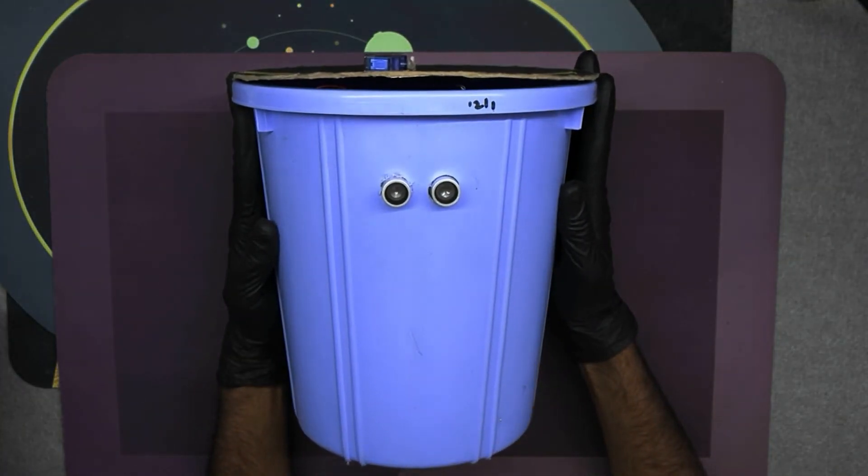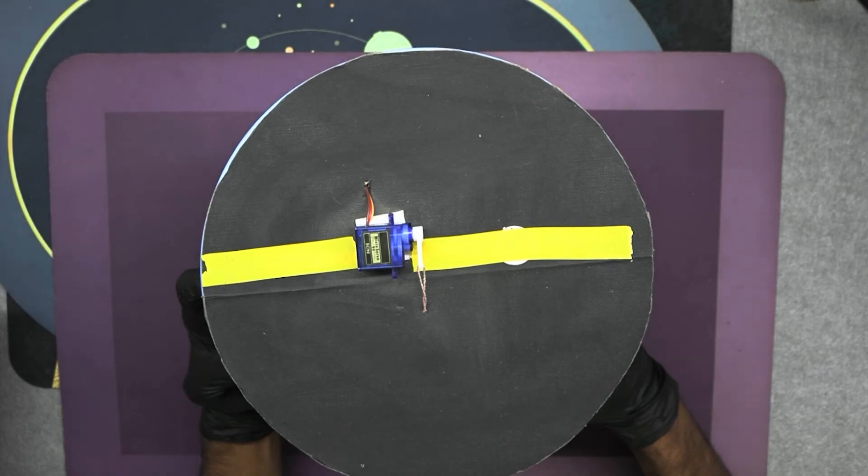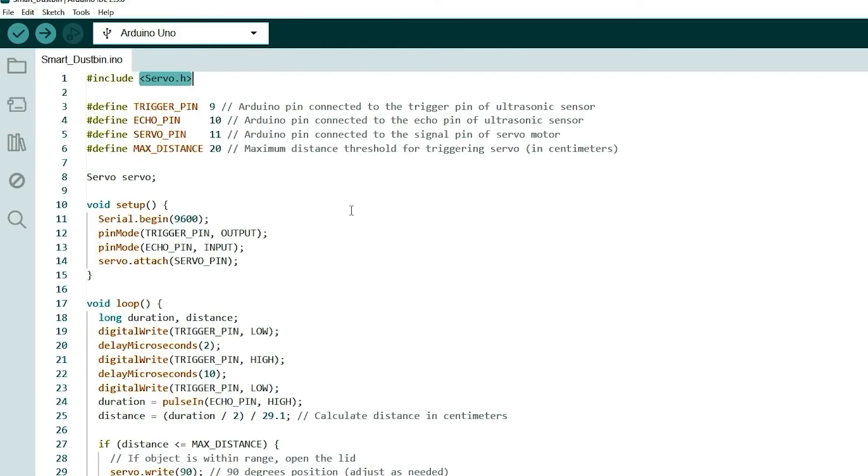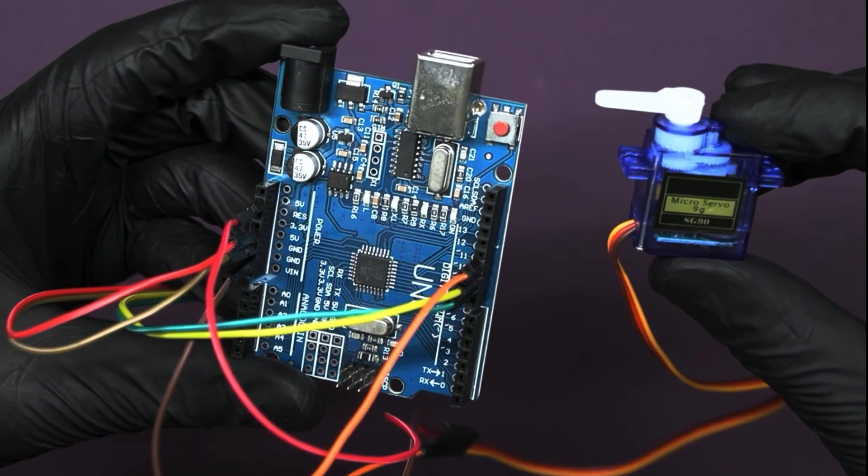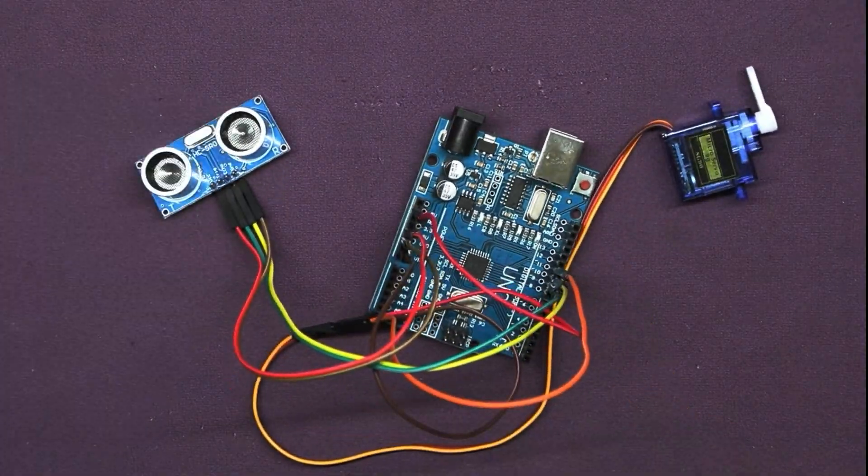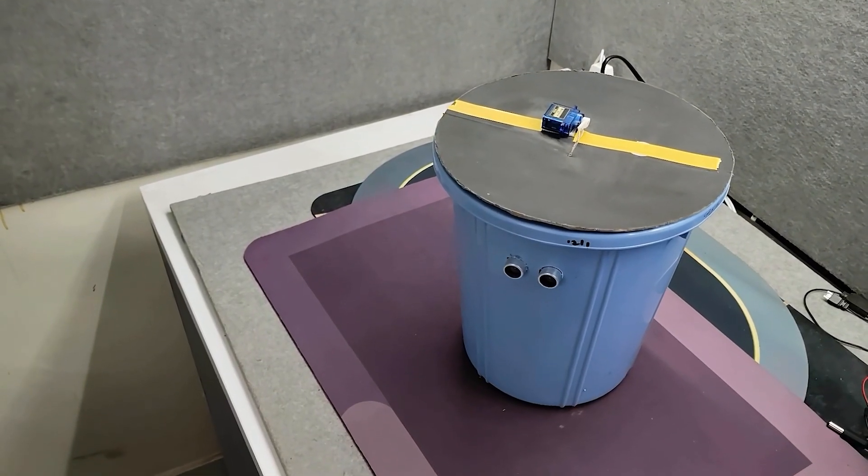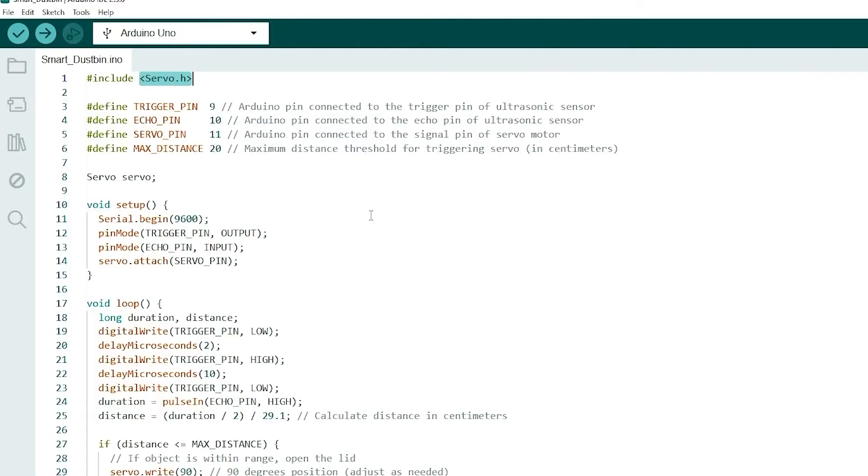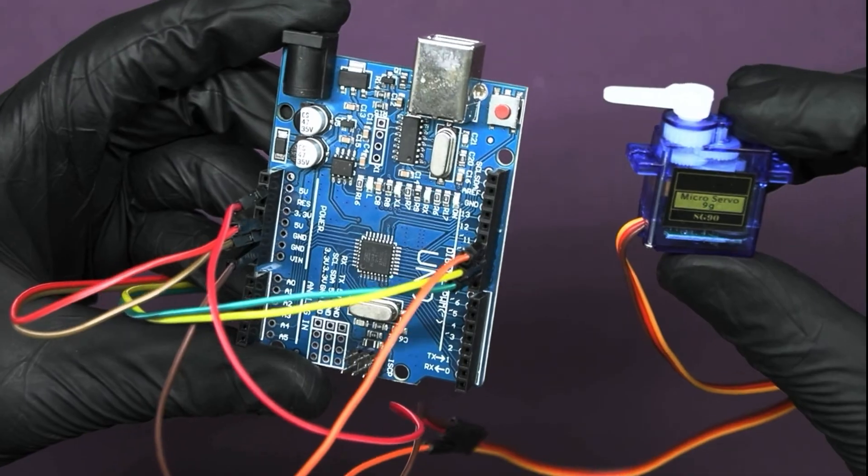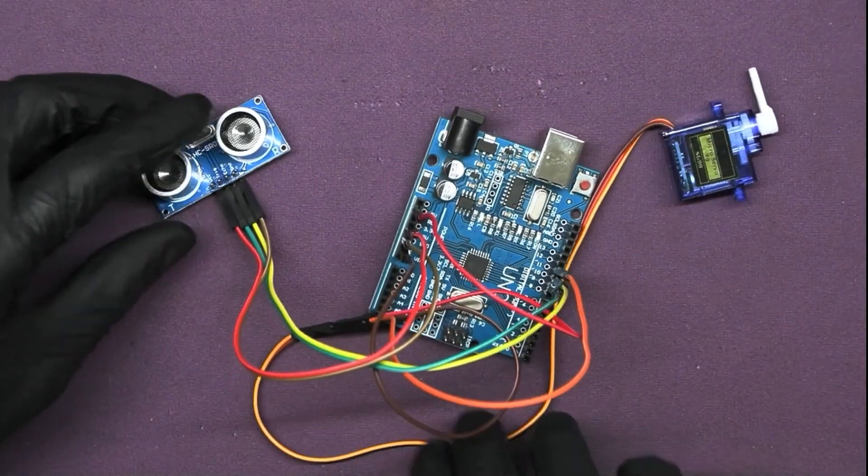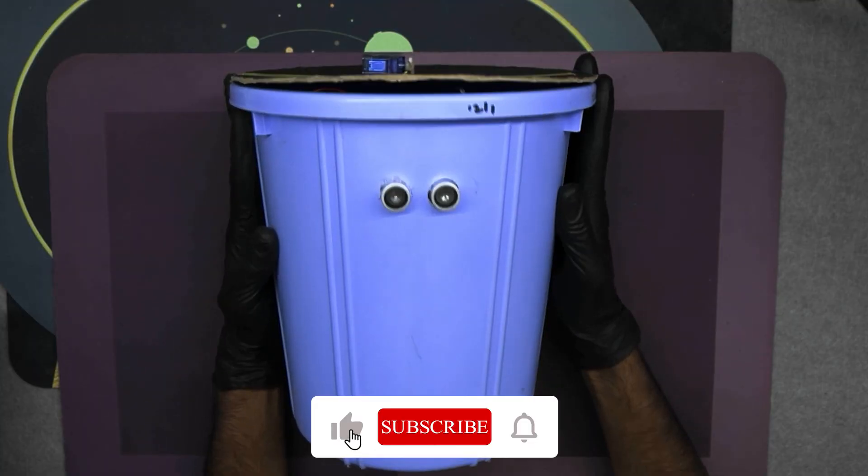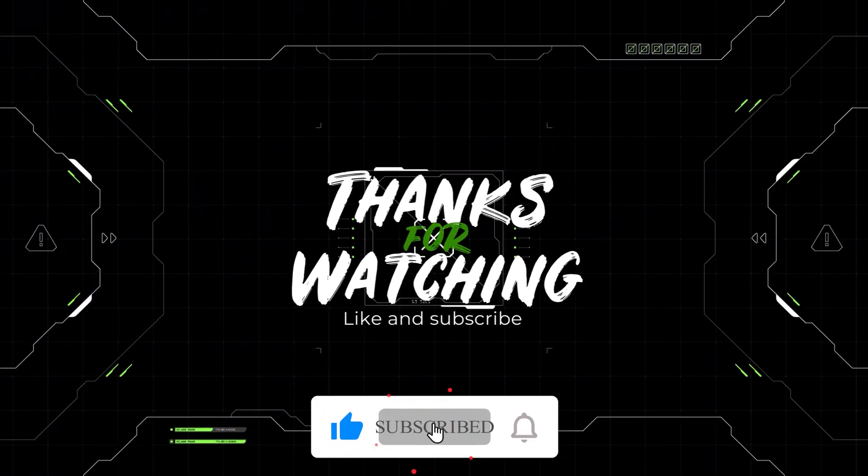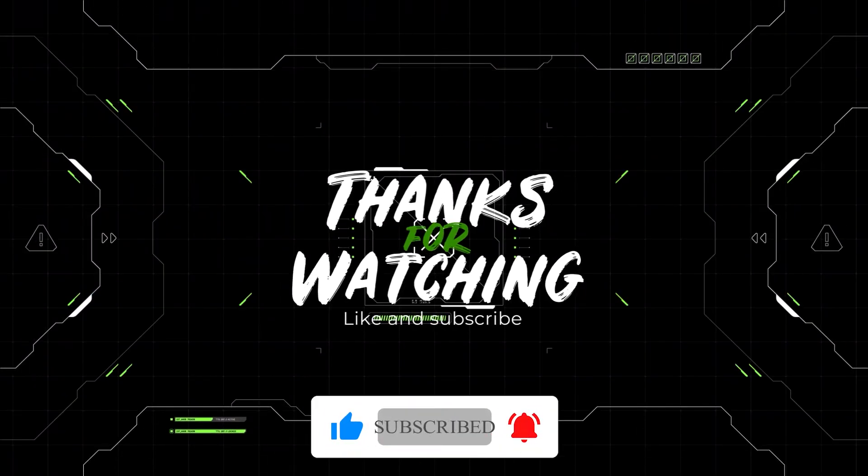Our smart dustbin is up and running. Now every time someone approaches the dustbin, the lid opens automatically allowing for hands-free waste disposal. With a little bit of coding and wiring, you can create your own smart home solutions. Thanks for watching. If you enjoyed this video, be sure to give it a thumbs up and subscribe for more DIY.